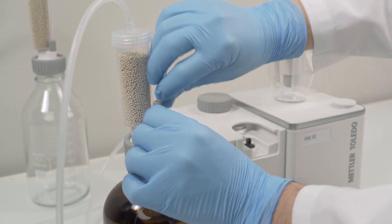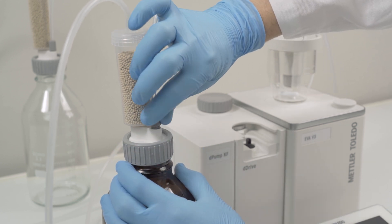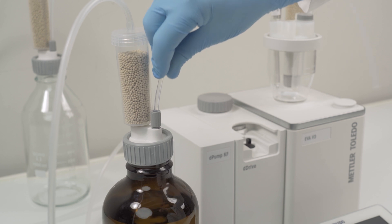Connect the solvent tube to the solvent bottle, screw it in half way and push it down until it reaches the bottom of the bottle, then fix it down.